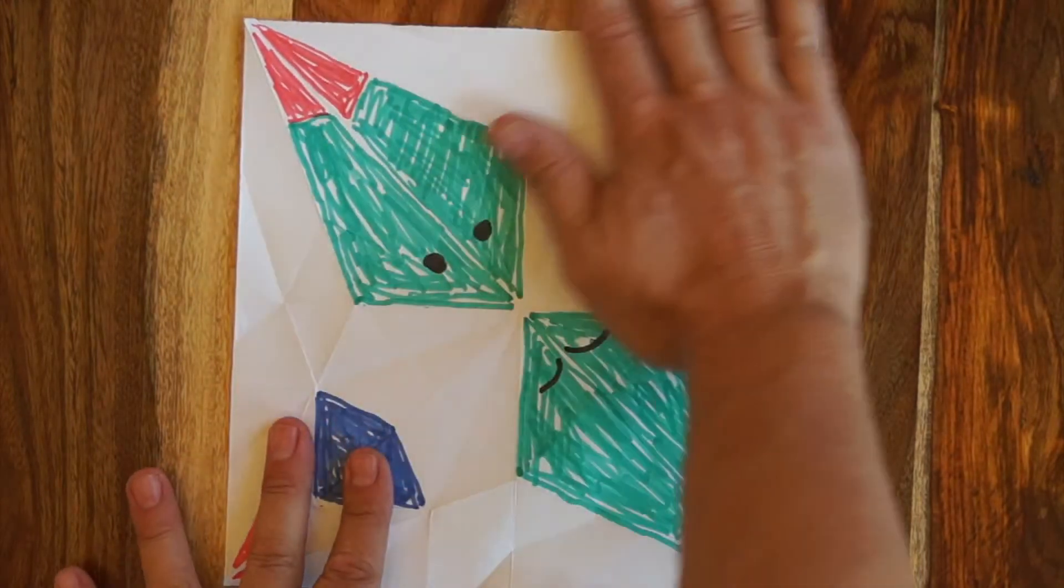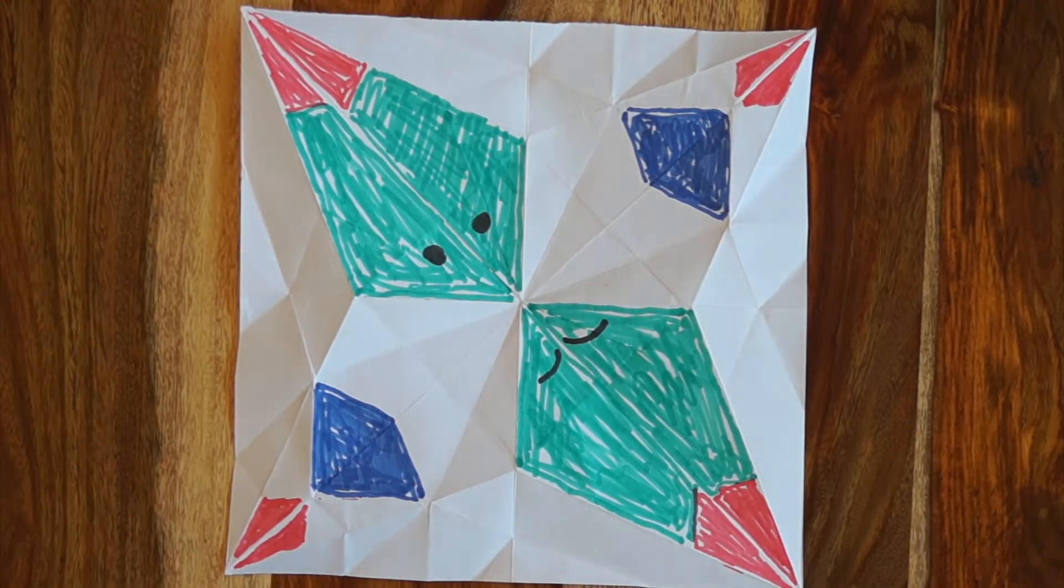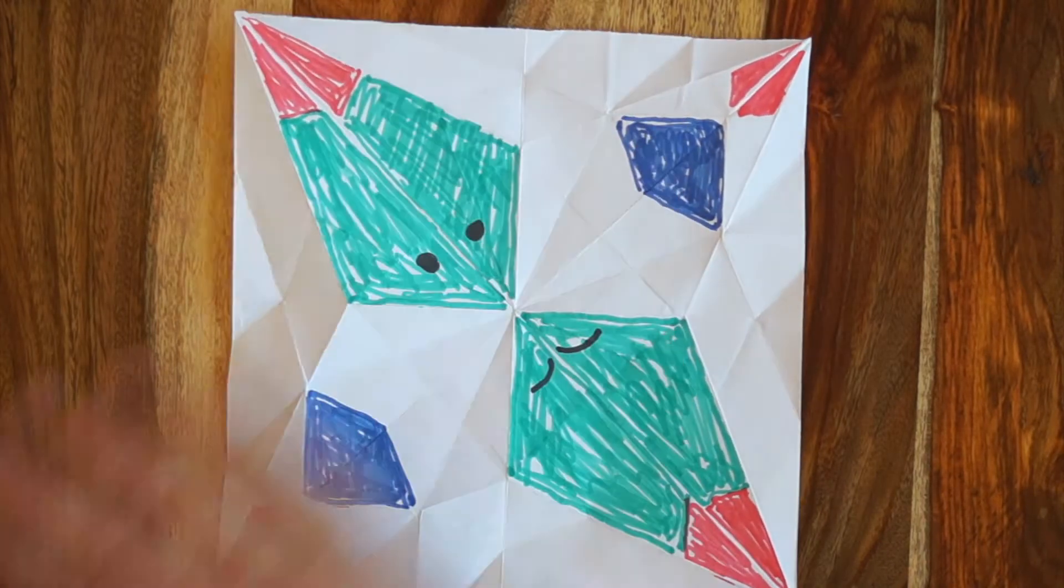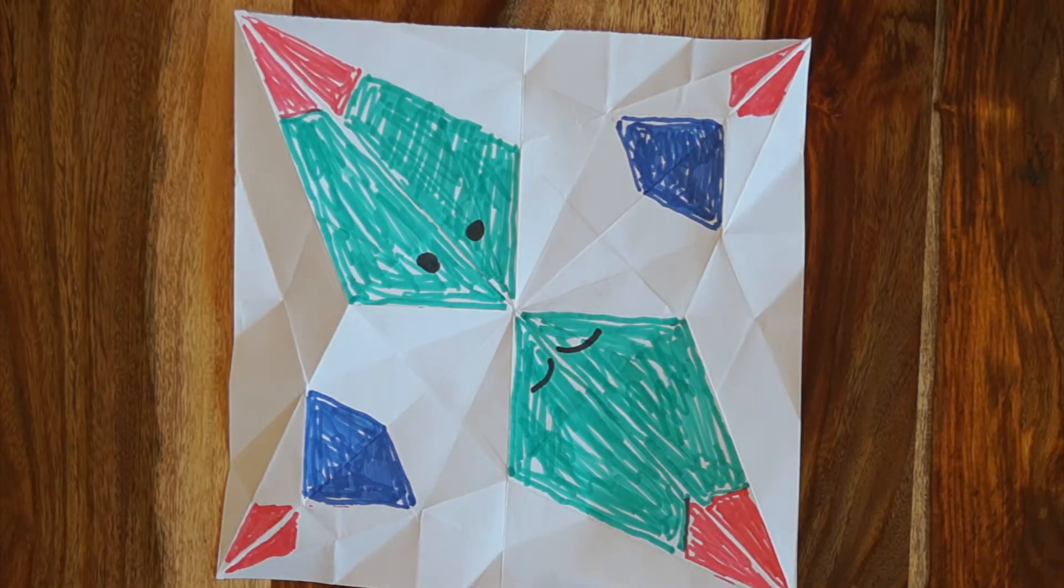But when you start, if you're folding for someone, you can't really tell what this is. And as you fold it, it's going to grow and grow and grow into a fish. So here is my unfolded colored in fish origami.